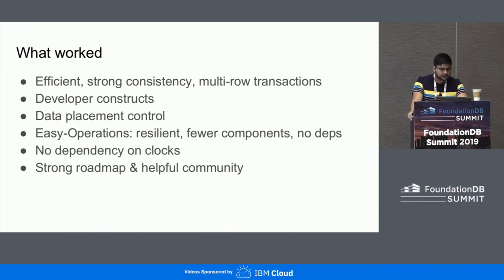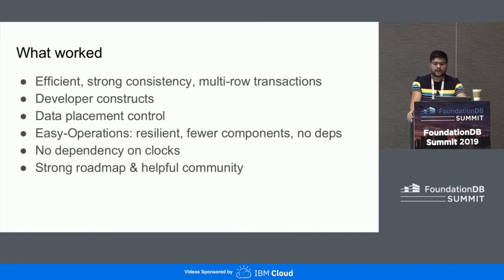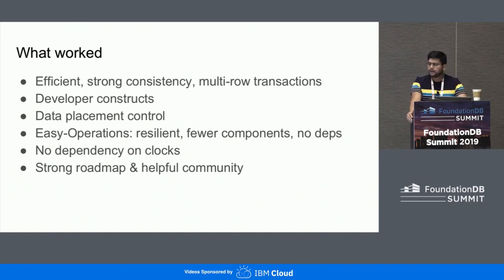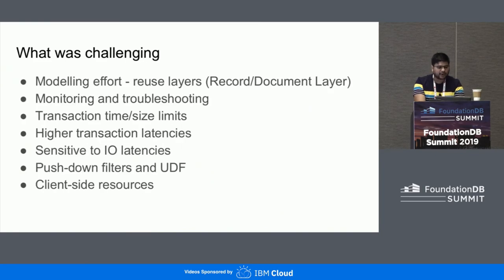To recap what worked for us: efficient multi-row transactions with strong consistency is a very powerful guarantee — sufficient to solve a large class of problems that would traditionally require an RDBMS. FDB gives us a very rich set of constructs and low-level data placement controls, using which you can develop many different kinds of layers. It is easy to operate, doesn't have any external dependency, very resilient, no dependency on time which is a significant bonus, and has a very strong community that is happy to help.